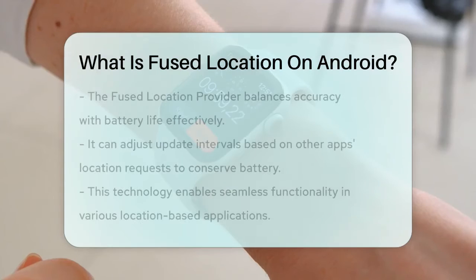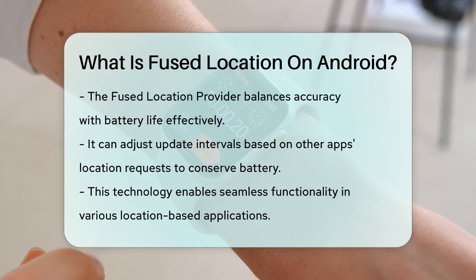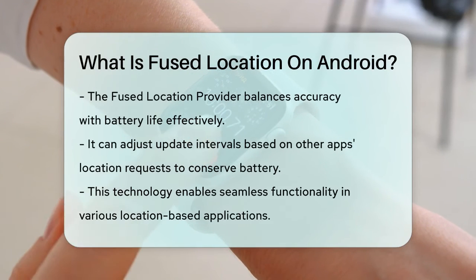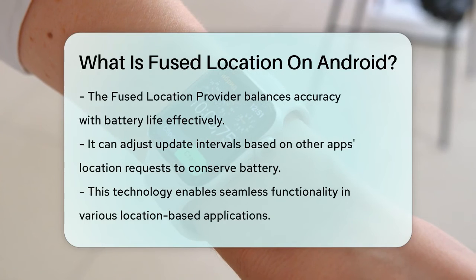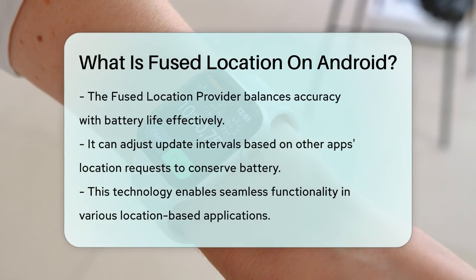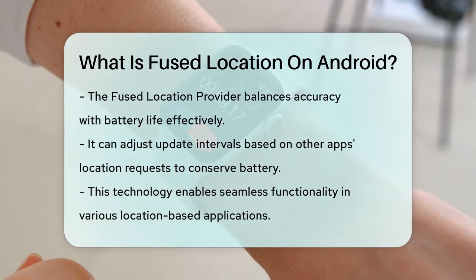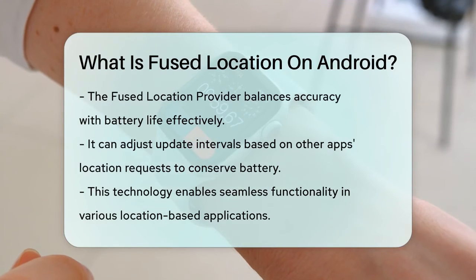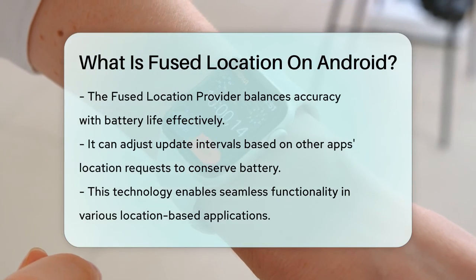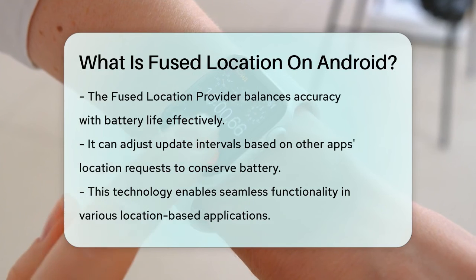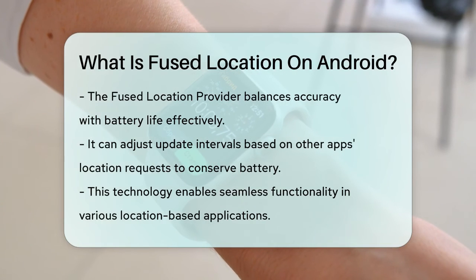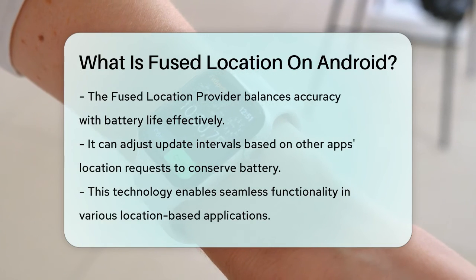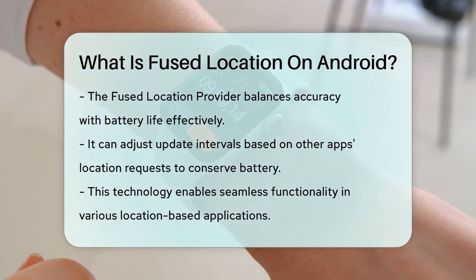One of the best things about the Fused Location Provider is its ability to balance accuracy and battery life. It can use the fastest interval for location updates if other apps on the device are already requesting updates, which helps save battery power.